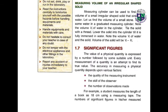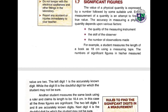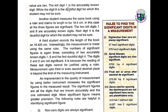Significant figures: The value of a physical quantity is expressed by a number followed by a suitable unit. Every measurement is an attempt to find the true value. The accuracy in measuring depends on: the quality of the measuring instrument, the skill of the observer, and the number of observations made. For example, a student measures the length of a book as 18 cm — there are 2 significant figures; digit 1 is accurately known and digit 8 is the doubtful digit.